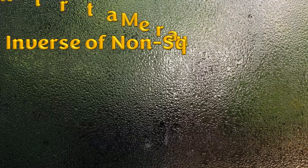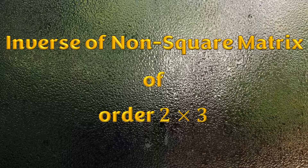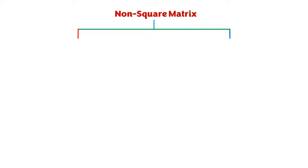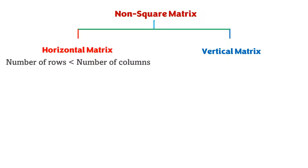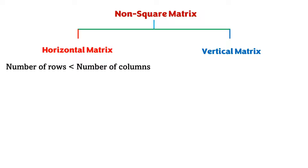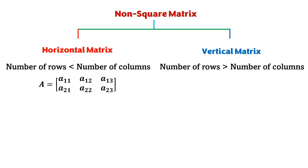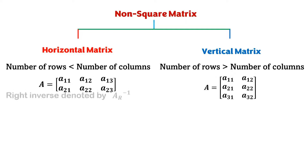In this video we are going to investigate the inverse of a non-square matrix. But before that, let's discuss the non-square matrix theory. A non-square matrix is of two types: horizontal matrix and vertical matrix. A horizontal matrix is one in which the number of rows is less than the number of columns, while a vertical matrix is one in which the number of rows is greater than the number of columns.